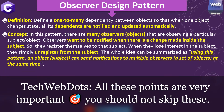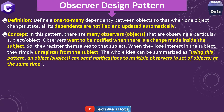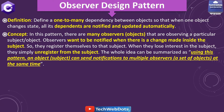In this pattern there are many observers, which we can also call objects, that are observing a particular subject. Observers want to be notified when there is a change made inside the subject, so they register themselves to the subject. When they lose interest, they simply unregister from the subject. The whole idea is that a subject can send notifications to multiple observers at the same time.